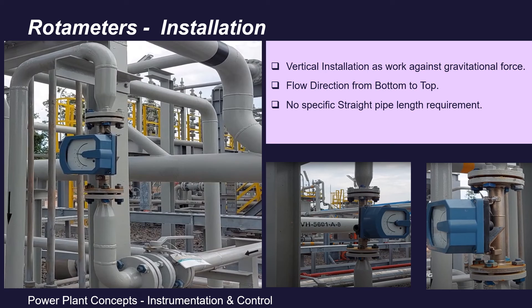Coming to installation: key points to remember are — first, it shall be installed vertically. Second, flow direction is from bottom to top. Regarding straight length requirement, theoretically there is no pipe straight length requirement for rotameters, but it is still advisable to give some minimum straight length before the flow enters the rotameter to get laminar flow.